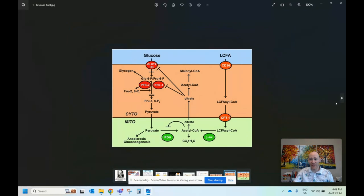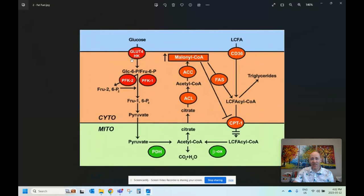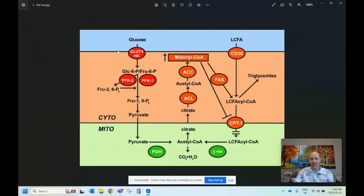And both of these diagrams, this one and this one are occurring simultaneously in the body. It's not one or the other. And these diagrams are updated versions of what was proposed in 1963. For example, there's a protein here called GLUT4, where my cursor is. That wasn't discovered until 1988.